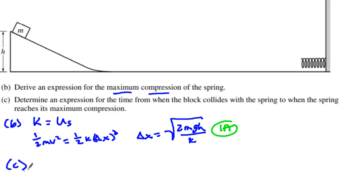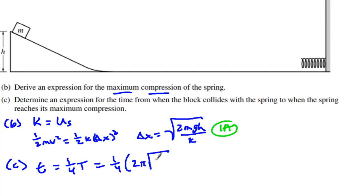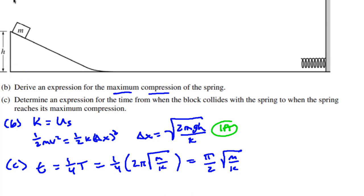Letter C: determine the expression for the time from when the block collides with the spring to when the spring reaches its maximum compression. This is actually going to be a quarter of the period. The time equals one-quarter of the period. We know the period of the spring is 2π times the square root of M over K, so this leaves us with π over 2 times root M over K. That was worth two points — one point for indicating a simple harmonic approach, and one point for the final answer.